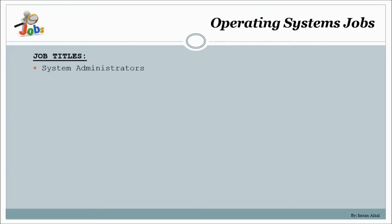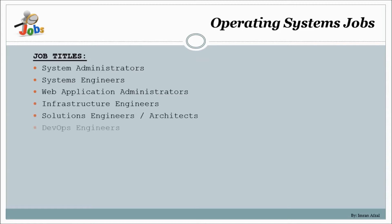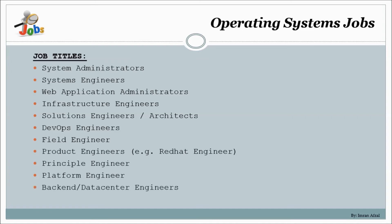Here we will talk about the operating system jobs and the titles: system administrators, system engineers, web application administrators, infrastructure engineers, solution engineers and architects, DevOps engineers, field engineers, product engineers, Red Hat engineer or Windows engineer, principal engineer, platform engineer, back-end data center engineer.